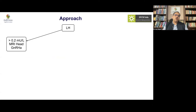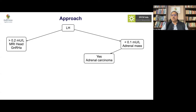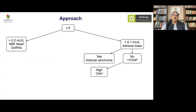If LH is pubertal — greater than 0.2 mIU/mL — every boy with central precocious puberty requires an MRI of the head, and often a GnRH analog, because bone age advancement is much more significant in boys compared to girls. For boys with pre-pubertal LH, the next step is to look for an adrenal lesion — which may be missed on ultrasound — ideally using CT scan. We should also obtain a 17-hydroxyprogesterone level; if elevated, it indicates congenital adrenal hyperplasia. Hypertension in this scenario suggests 11-hydroxylase deficiency.